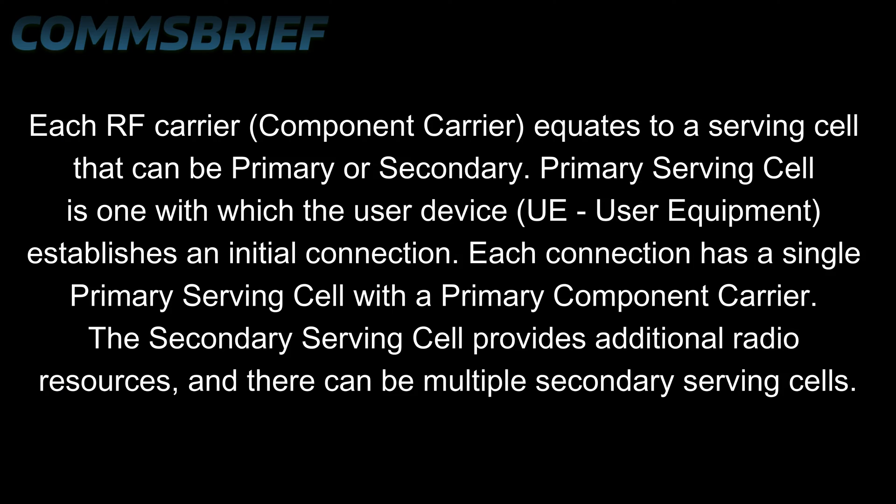There's also a concept of cell categorization, which consists of a primary serving cell and a secondary serving cell. Each RF carrier or component carrier equates to a serving cell that can be primary or secondary. The primary serving cell is the one with which the user device — the UE — establishes an initial connection, and each connection has a single primary serving cell with a primary component carrier. The secondary serving cell provides additional radio resources, and there can be multiple secondary serving cells.